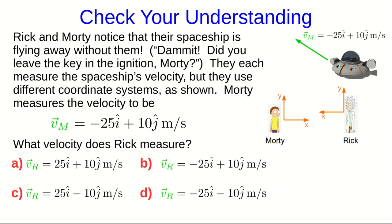Let's check your understanding. So, Rick and Morty have noticed that their spaceship is flying away. Morty, using the axes shown next to him, has measured the velocity of the spaceship to be this. Rick is using these axes. And so, what velocity should Rick have measured?